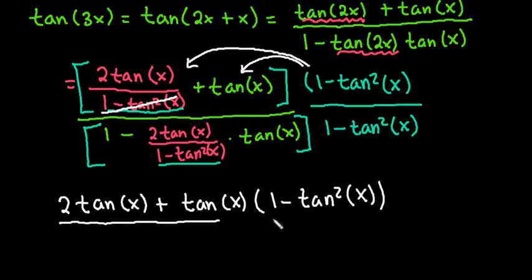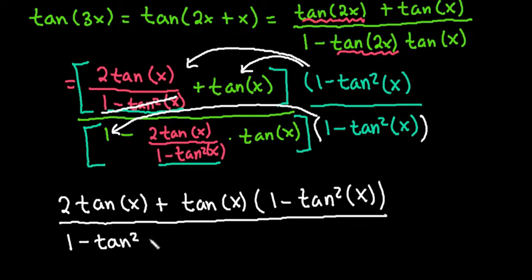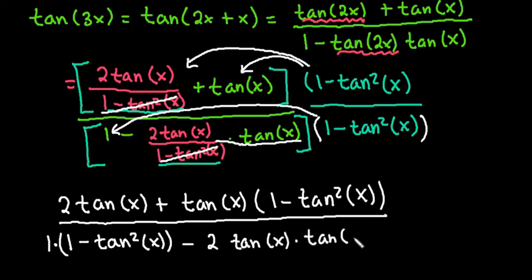We're going to do this same thing to the denominator. So we're going to take this, and we're going to distribute it in to both things. So for the first one, I'm just multiplying it by 1. So 1 times anything is just that value, no matter how complicated. So we just have 1 times this, which is just going to give us the 1 minus tangent squared x. Minus, on this one, because I could technically think of this as one fraction here, we could just cancel out the denominator. So I'm really left with 2 tangent of x times tangent of x.